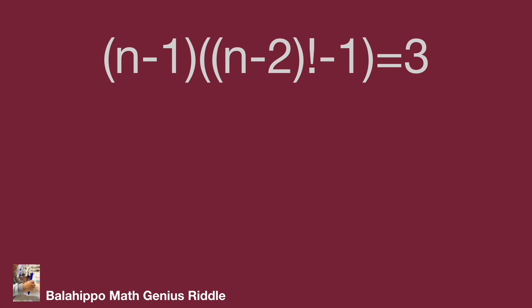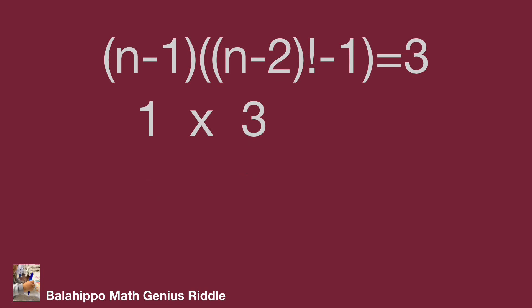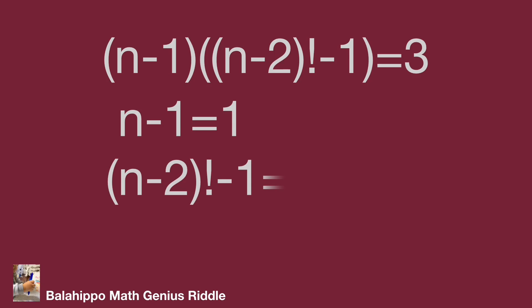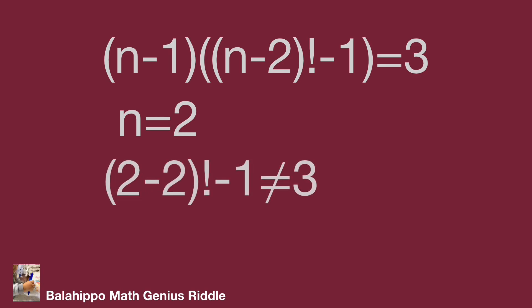Since n is a positive integer, these two quantities multiply to give 3, so they can be either 1 times 3 or 3 times 1. For the case 1 times 3: n minus 1 equals 1 and (n minus 2) factorial minus 1 equals 3, giving n equals 2. Substituting n equals 2 into (n minus 2) factorial minus 1 gives 0 factorial minus 1 equals 0, which is not equal to 3. So n equals 2 is not the answer.